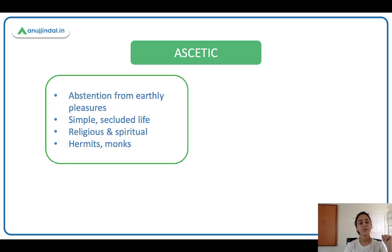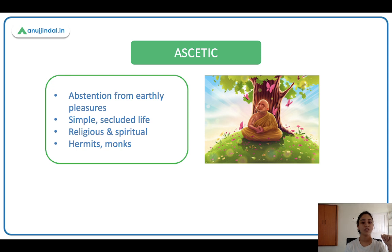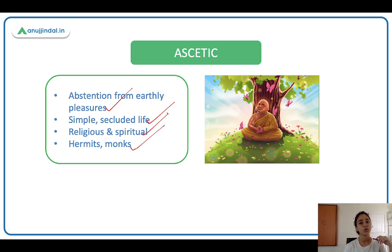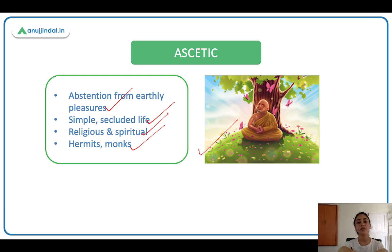Next is ascetic. An ascetic is someone who abstains from earthly pleasures — sacrificing things and living a simple, secluded life. These people are religious and spiritual, like hermits, monks, and sadhus. They leave home, family, relationships, and friends to live simply. They wear simple clothes, eat simple food, refrain from bad habits — no drinking, no smoking. They spend most of their time surrounded by nature, meditating and praying. Such people are called ascetics.